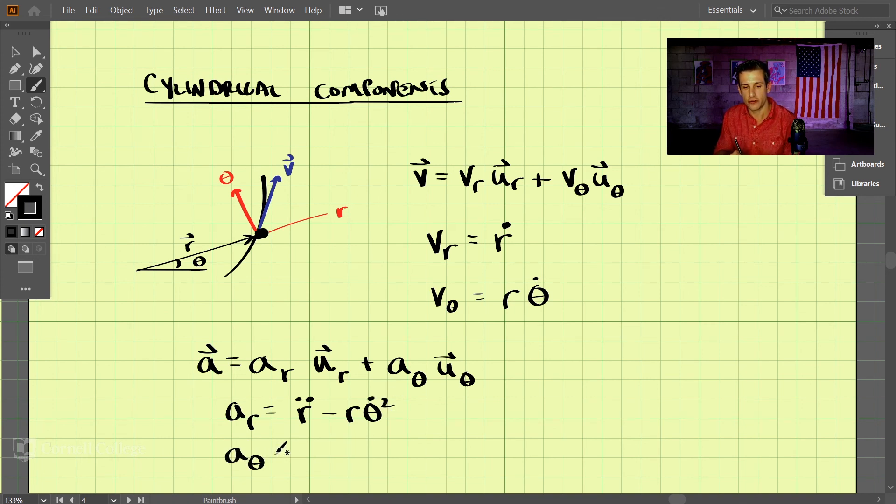And then in the transverse direction, we have R theta double dot plus two times R dot theta dot. Okay, so I think I got those right. Let's double check. So this is where it gets a little more complex.